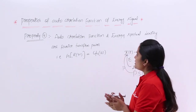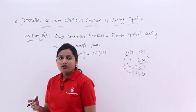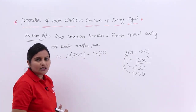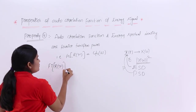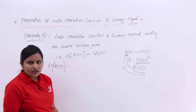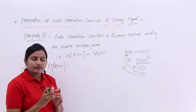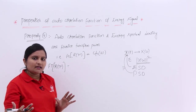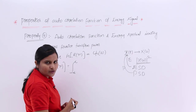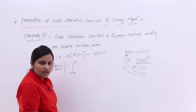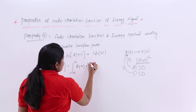Now we need to prove that the autocorrelation function and energy spectral density are Fourier transform pairs. This property was already discussed under spectral properties; here we are going to prove it. We consider the Fourier transform of R(τ). For any signal, the Fourier transform is obtained by multiplying with e^(−jωτ) and integrating, giving: integral from −∞ to ∞ of R(τ) e^(−jωτ) dτ.